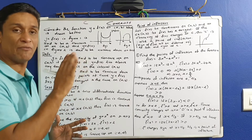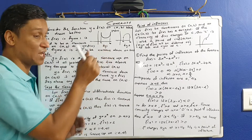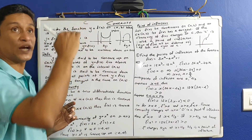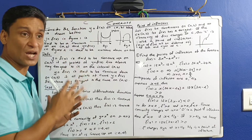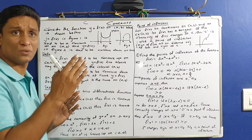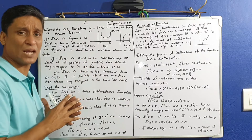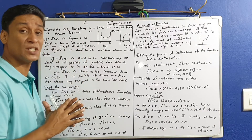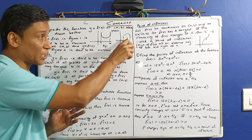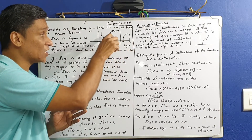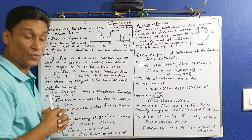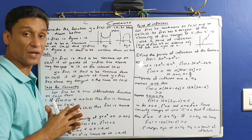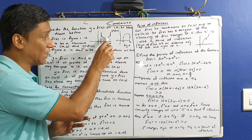Concave down on interval AB. In general mathematical terms, this is a concave down and this is a concave up. A tangent is used to describe these concepts.